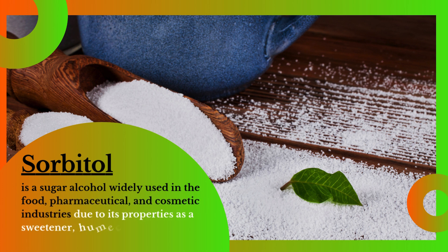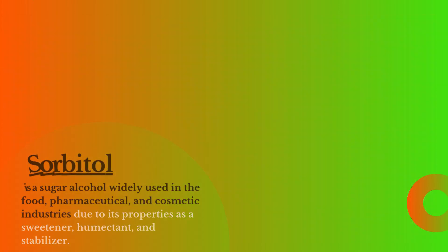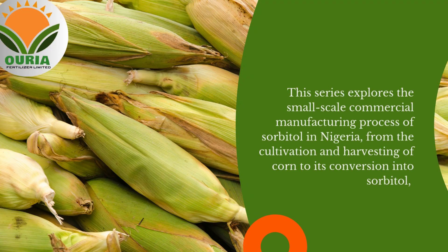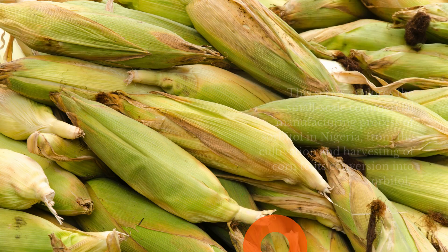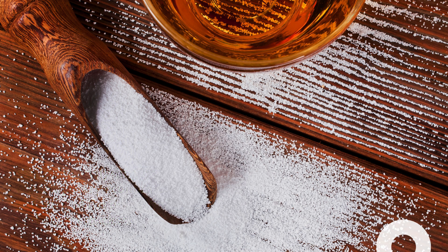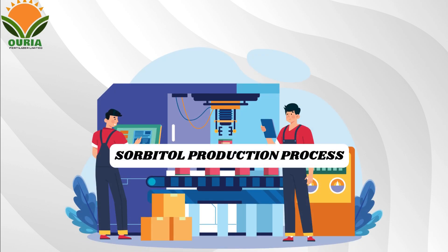Opening purview: Sorbitol is a sugar alcohol widely used in the food, pharmaceutical, and cosmetic industries due to its properties as a sweetener, humectant, and stabilizer. Nigeria, with its vast agricultural resources, has the potential to be a leading producer of sorbitol, especially through the cultivation and processing of corn — a key raw material. This series explores the small-scale commercial manufacturing process of sorbitol in Nigeria, from cultivation and harvesting of corn to its conversion into sorbitol, while also analyzing the economic potential of domestic and export markets.